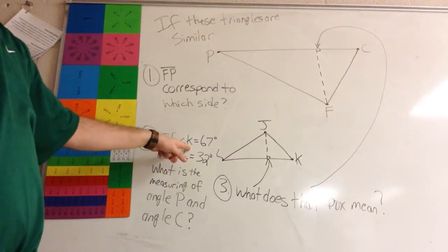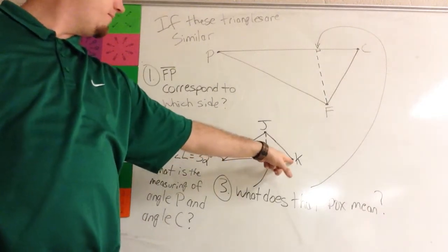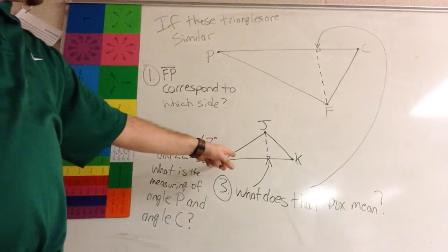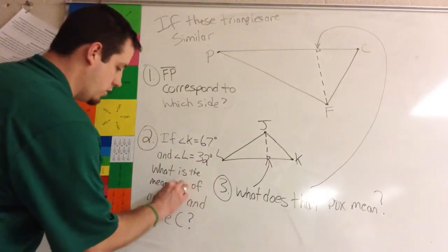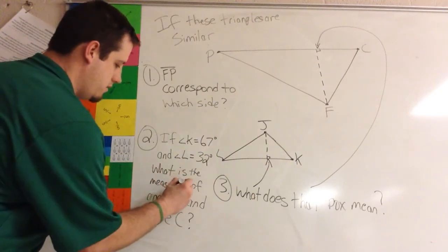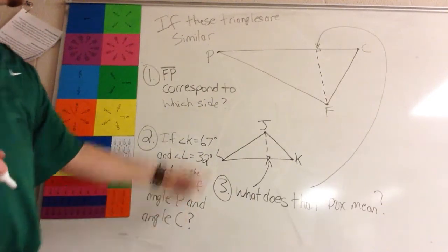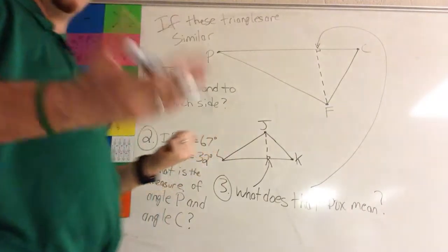If angle K is equal to 67, that's this angle right here, and angle L is equal to 32, that's this angle, what is the measure of angle P and angle C? So angle P and angle C are up there. You just tell me what they're equal to.